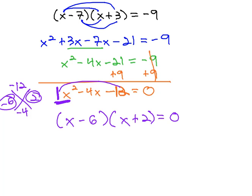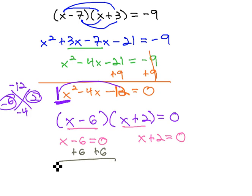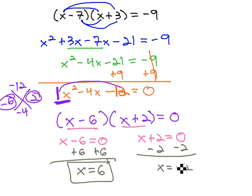Once we're factored and equal to 0, we can take each factor x minus 6 and set it equal to 0. x plus 2 equals 0. We can quickly solve these equations by adding 6 to get x equals 6 and subtracting 2 to get x equals negative 2.